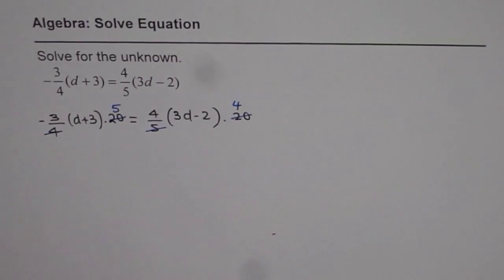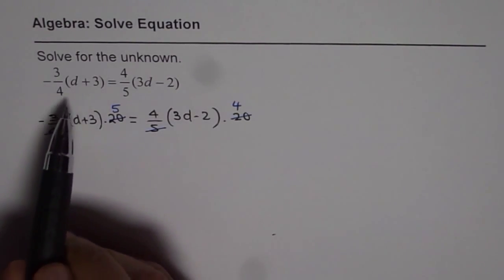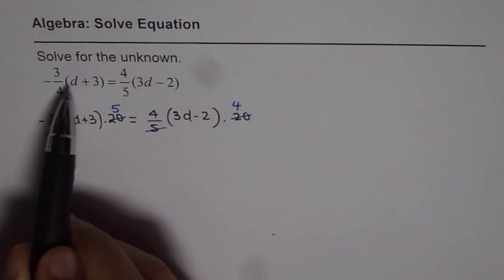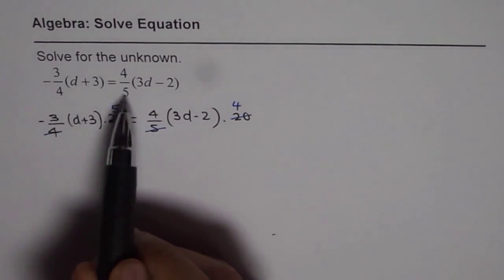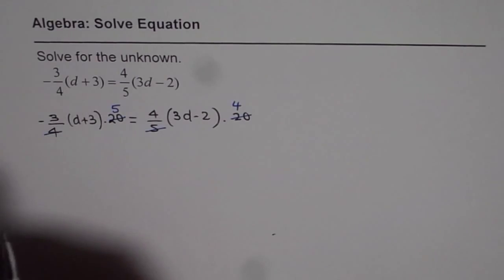Basically, you get rid of fractions in this operation. Effectively, you are multiplying the first term on the left side by 5 and the term on the right side by 4. We also call it cross multiply. Now let us multiply and expand.